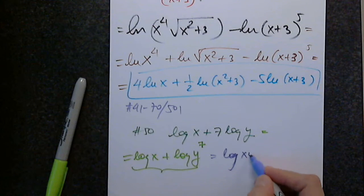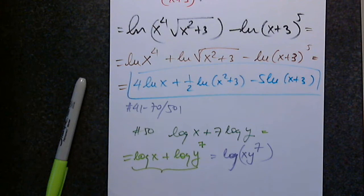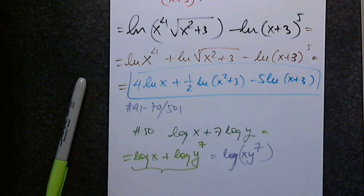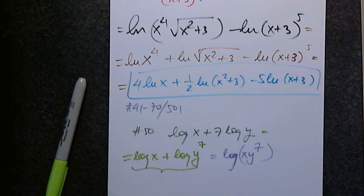Log x times y to the 7th. Exactly — you got the idea. Please choose anything you want from 41 through 70, and then you'll see what we are doing with this in the next two sections.